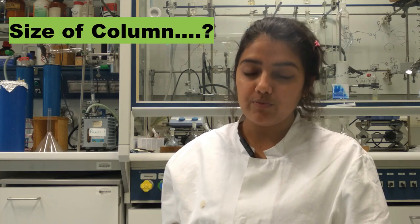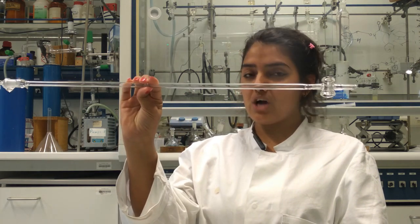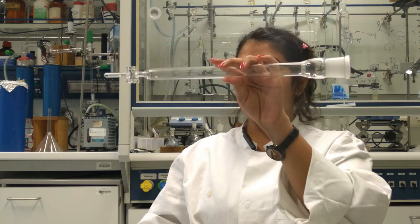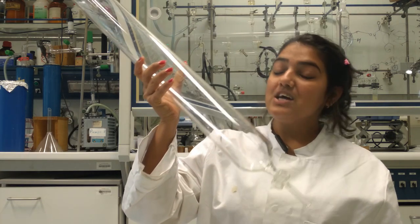When we want to start our column chromatography, the first question which comes to mind is the size of column. Which size of column should be the best one for our separation? The smaller diameter and longer in size, or the shorter with a bigger diameter, or the huge elephant size of column?